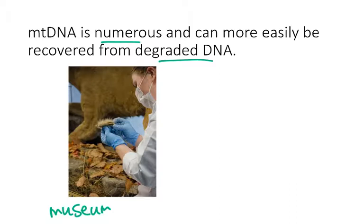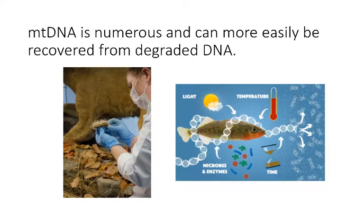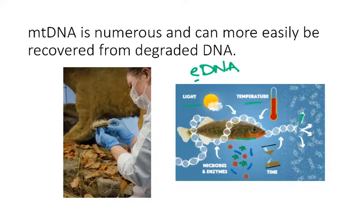Museum specimens are one application for mitochondrial DNA. Another is eDNA studies. The 'E' in eDNA stands for environmental, and the basis of an environmental DNA study is that all organisms — like this fish shown here — release their DNA into the environment. Once released, it's affected by factors like light, temperature, microbes, enzymes in the water, and time — all of which degrade the DNA. So in eDNA studies, it's best to use a mitochondrial DNA marker because you can more easily recover it even when the DNA is degraded.